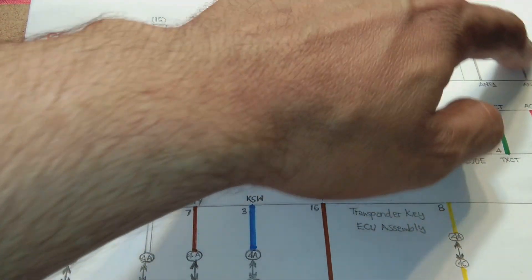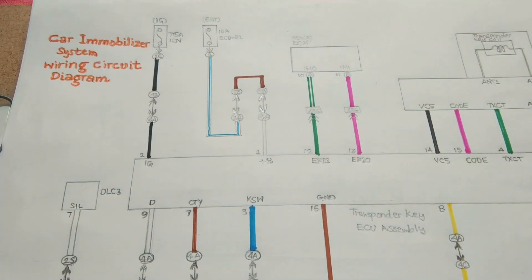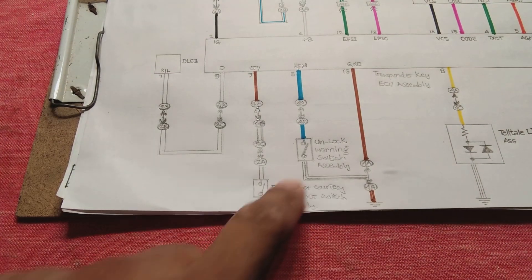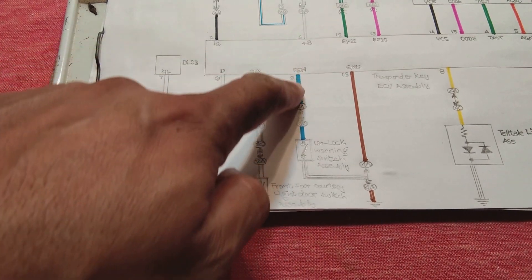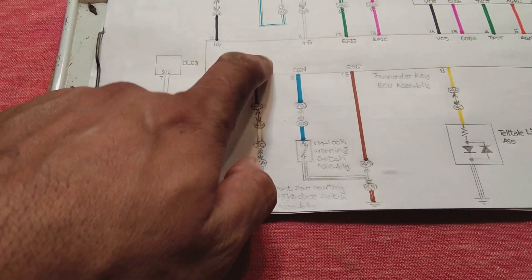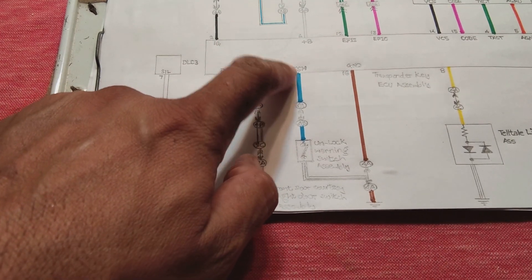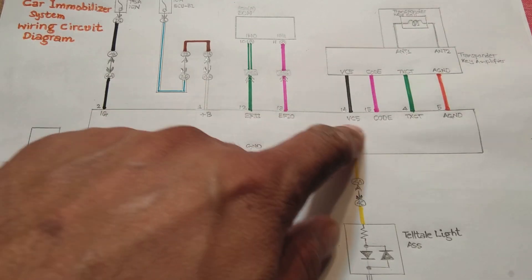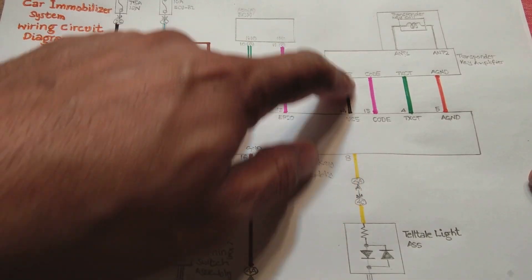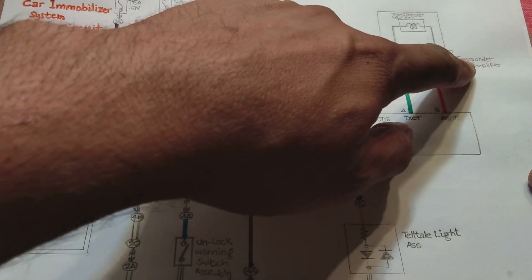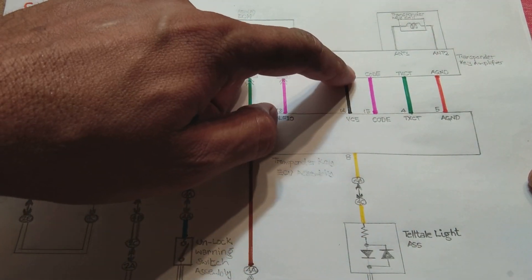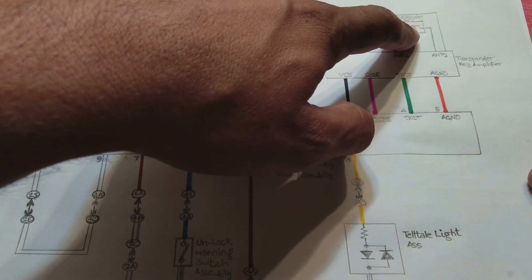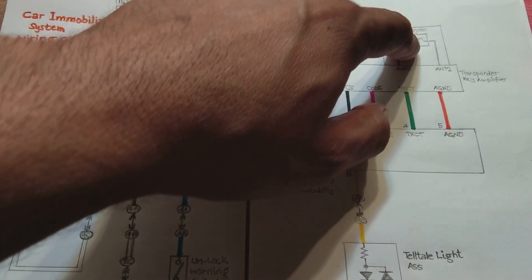The transponder key amplifier and coil are an integrated part of this unit. When the key is inserted in the key cylinder, the unlocking switch is closed. It provides a ground on the key SW line to the transponder key ECU assembly. That ground is detected by this ECU, and then the ECU provides five volt power on the VC5 line. The VC5 line takes this power and provides it to the transponder key amplifier, feeding the coil.